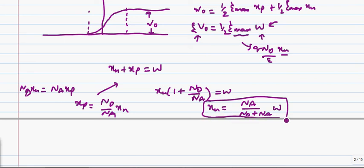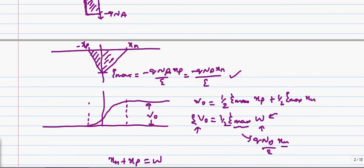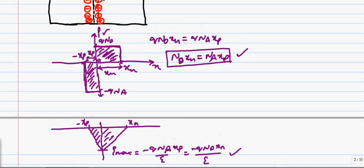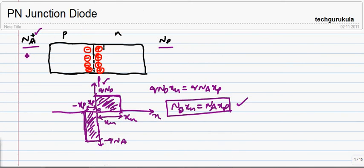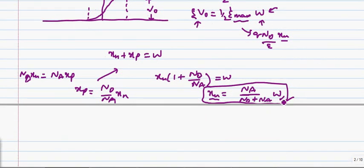Now, this makes a very good sense actually, because x_n will be n_a over n_d plus n_a fraction of the w, the junction width. And we know that if n_a is high, x_n will be high. That's what we have seen. When n_a is high, here n_a is high. When n_a is high, x_n is high.